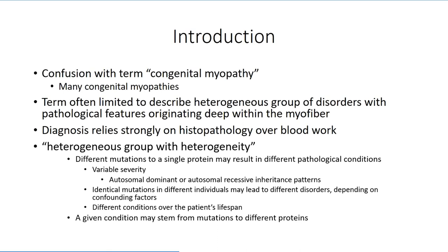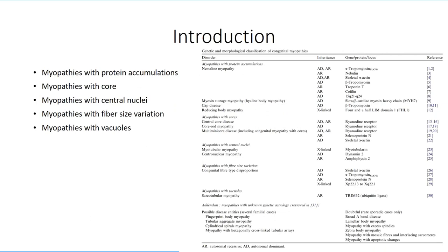Most of these conditions involve structural deformities within the cell, so histopathological workup is more important than blood work in coming to a diagnosis. The table on the right displays a relatively comprehensive list of what are considered to be the congenital myopathies — not presented for memorization, but just to give an appreciation for the diversity of the group of disorders. The traditional subgroups include myopathies with protein accumulations, myopathies with core, myopathies with central nuclei, myopathies with fiber size variation, and myopathies with vacuoles.